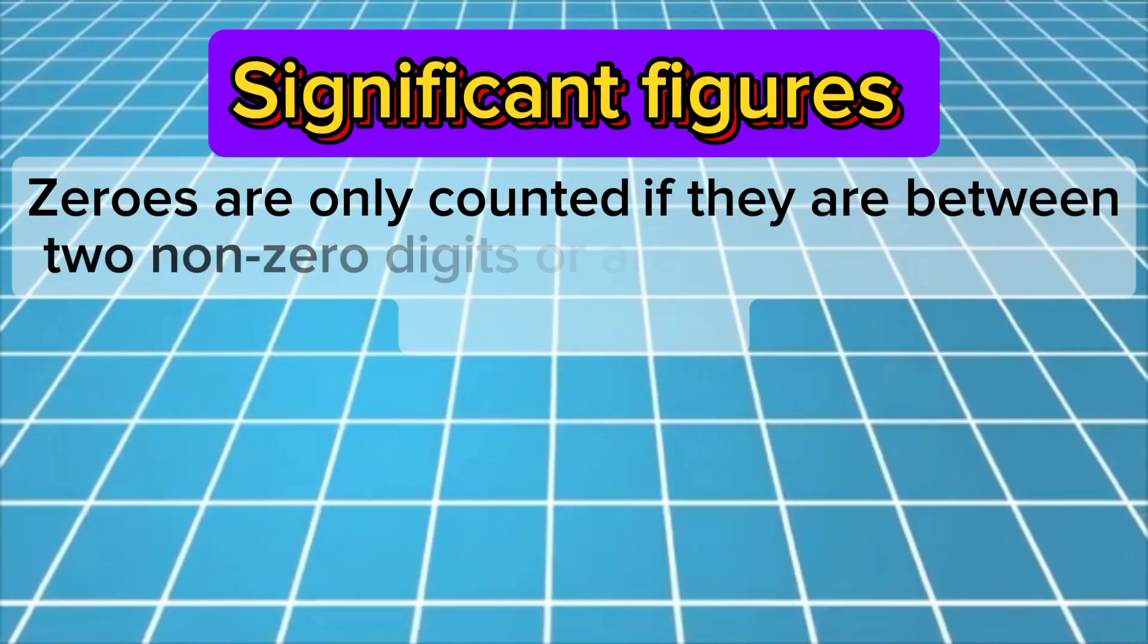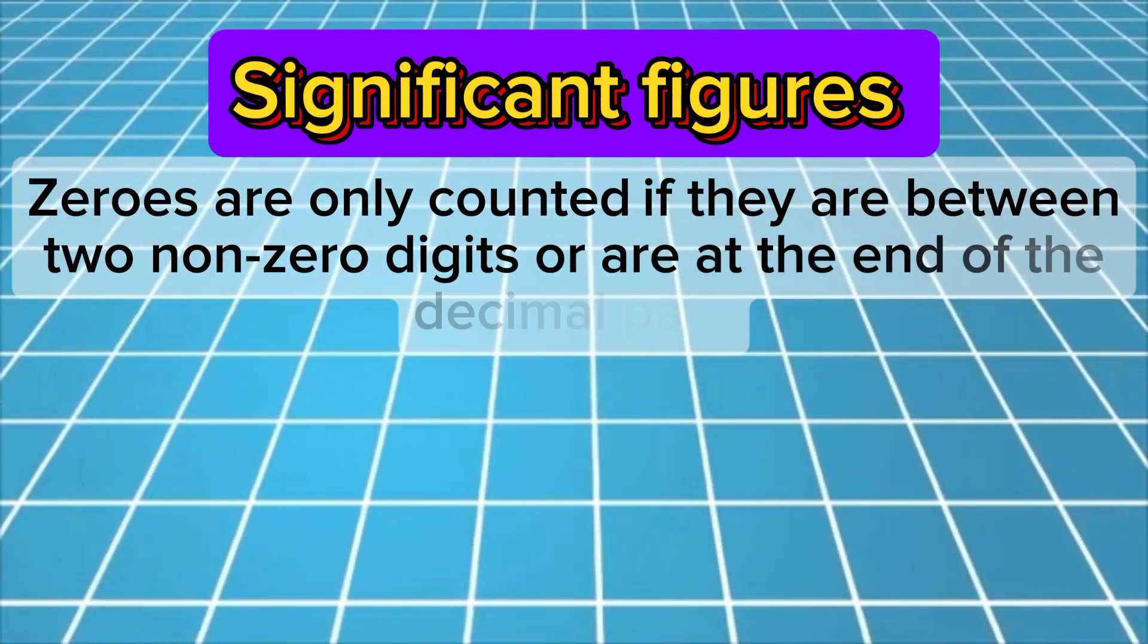Zeros are only counted if they are between two non-zero digits or are at the end of the decimal part.